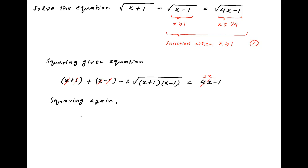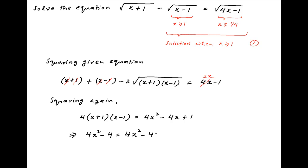Squaring again, we get 4 times (x+1)(x−1) is equal to (2x−1)², which equals 4x² minus 4x plus 1. This implies 4(x²−4) equals 4x² plus 1. The 4x² cancels on both sides, and we get 4x equals 5, or x equals 5/4.